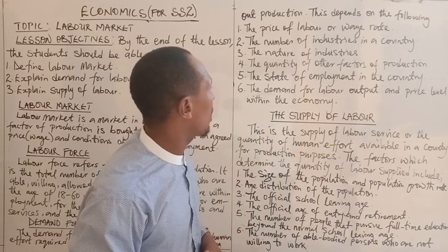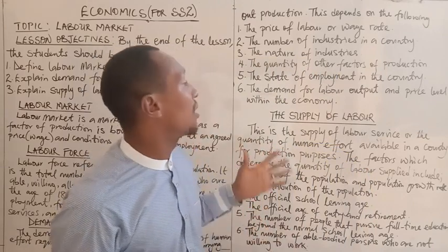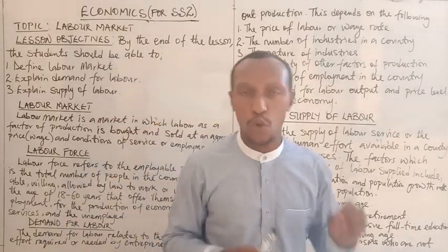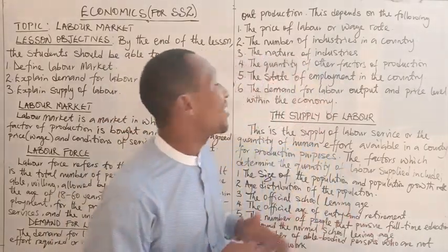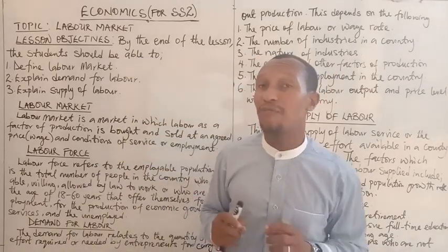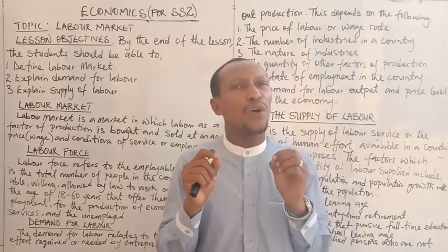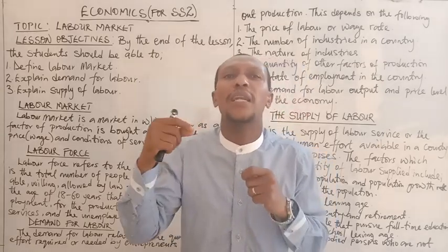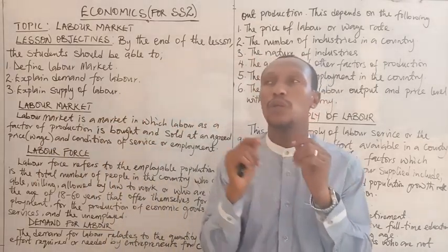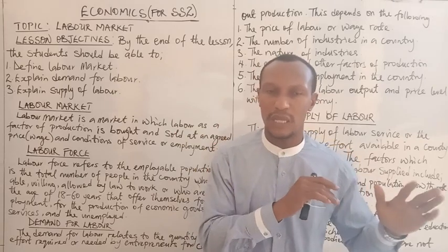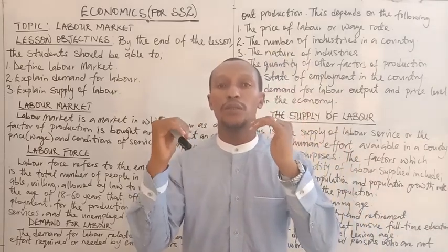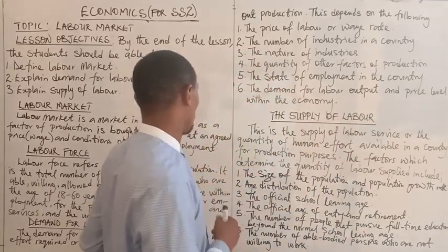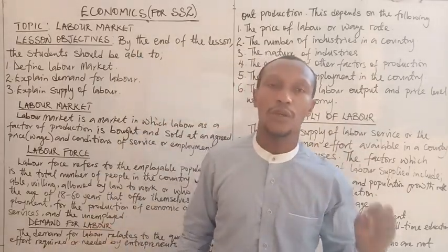Another factor is the demand for labor output and price level in the economy. The demand for labor is a derived demand — it is not required for its own sake, but for what labor can help to produce. When we get to the types of demand, which is an SS1 topic, you will understand this concept better. The demand for labor is derived from the demand for the goods and services that labor produces.